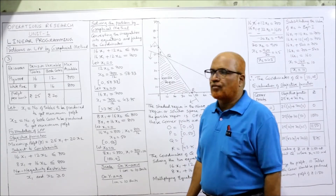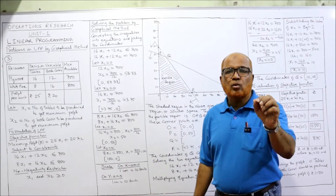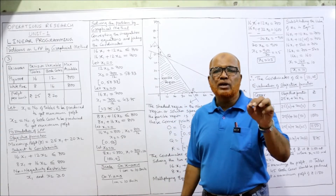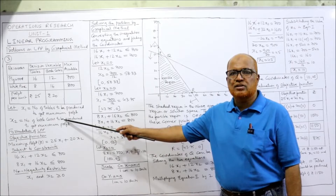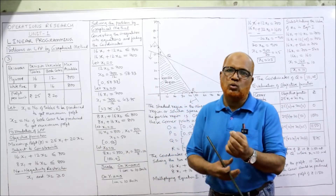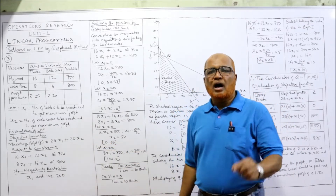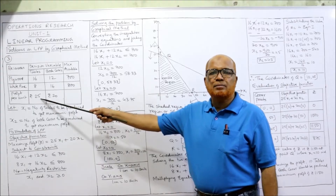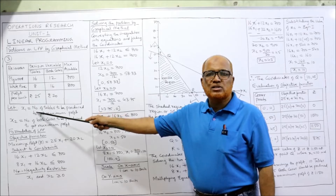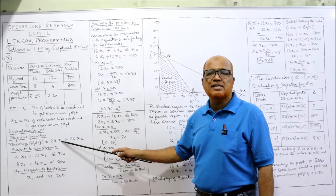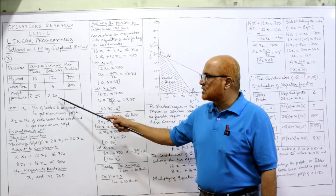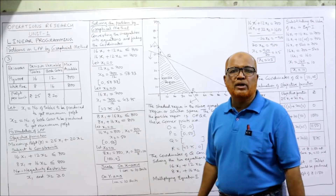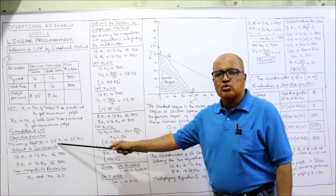Now we can formulate easily. Let x1 = number of tables to be produced, and x2 = number of bookcases to be made, in order to maximize the profit. Formulation of LPP — objective: maximize Z = 25x1 + 20x2, where 25x1 is total profit from selling x1 tables and 20x2 is total profit from x2 bookcases.